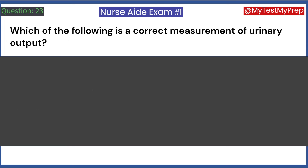Which of the following is a correct measurement of urinary output? A. 40 ounces. B. 300 cubic centimeters. C. Two cups. D. One quart. Answer: B. 300 cubic centimeters.